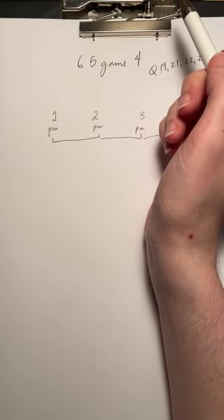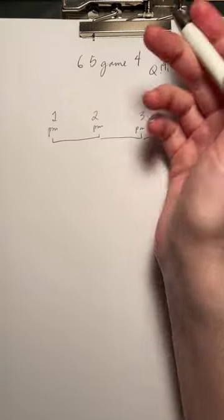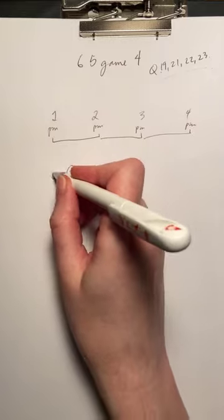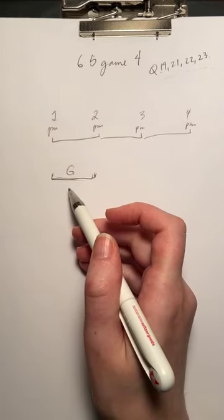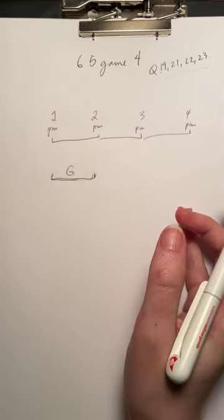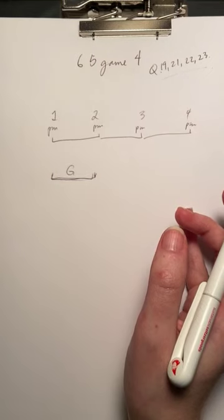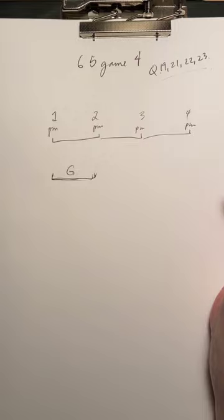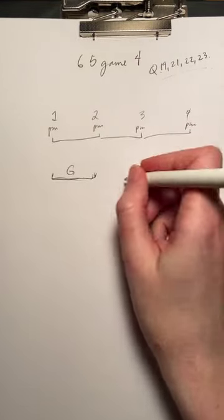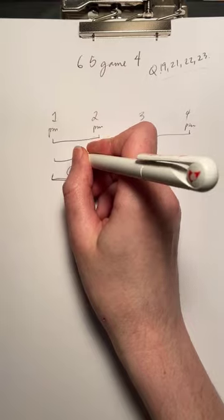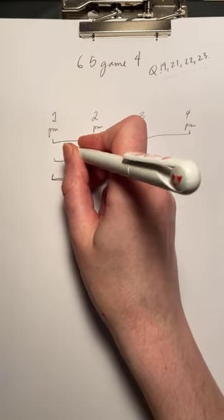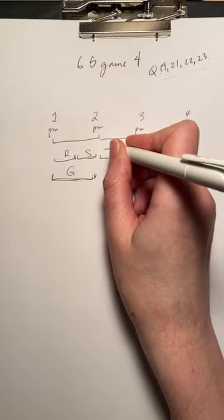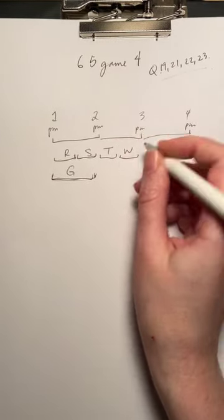The programs that are to fill this time block include an hour-long program called Generations. Okay, so G, that's an hour long. And four half-hour programs: Roaming, Sundown, Terry, and Waterloo. So they're half the size. So Roaming, Sundown, and Waterloo.